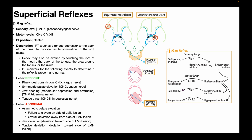Similarly, tongue deviation also occurs toward the side of the lower motor neuron lesion. Normally the tongue thrust should be symmetric anterior protrusion, but with a left lower motor neuron lesion, the tongue deviates left. For an upper motor neuron lesion, everything is flipped: asymmetric palate elevation would show overall deviation toward the side of the upper motor neuron lesion, jaw deviation would be away from the lesion, and tongue deviation would also be away from the side of the upper motor neuron lesion. A useful learning approach is to learn it first for lower motor neuron lesions, then know that for upper motor neuron lesions everything is opposite.